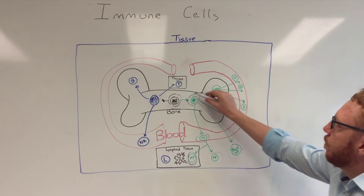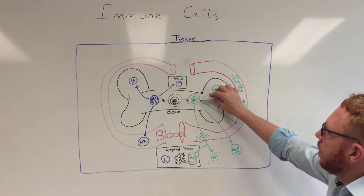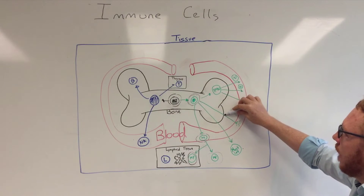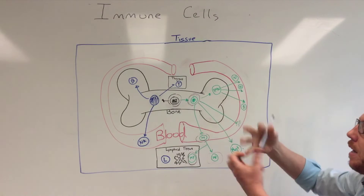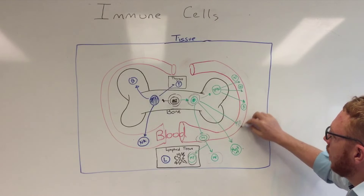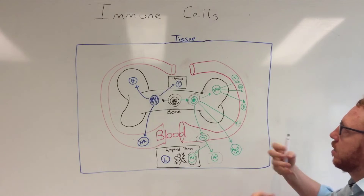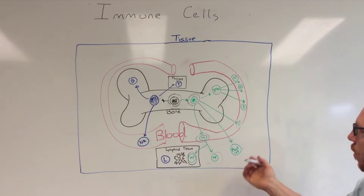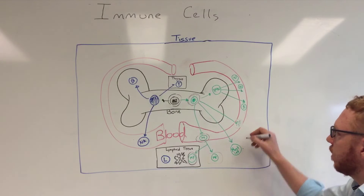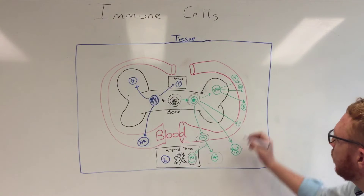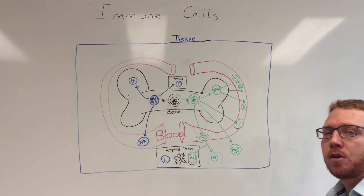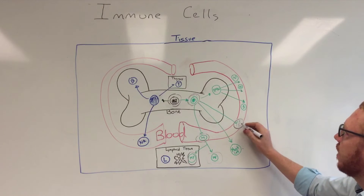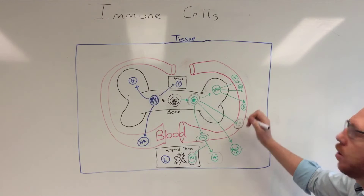Another line of the myeloid cells goes down a path to become a megakaryocyte, and then this large cell as it moves into the blood breaks into finer cells called platelets. Platelets also help with modulating the inflammatory response and have a role in clotting, so they also have an effect in the immune system.